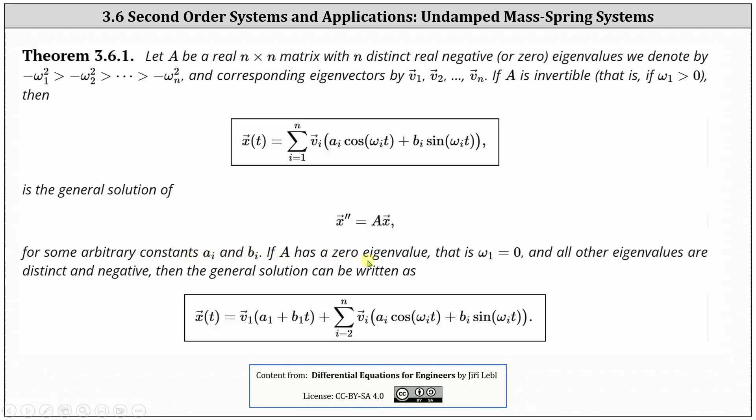If A has a zero eigenvalue, that is omega one equals zero, and all other eigenvalues are distinct and negative, then the general solution can be written using the formula shown below. Notice the only difference here is the beginning part where we have X of T equals vector V sub one times the sum of A sub one and B sub one T plus, and this sum here is the same as the sum above except now we start with i equals two.